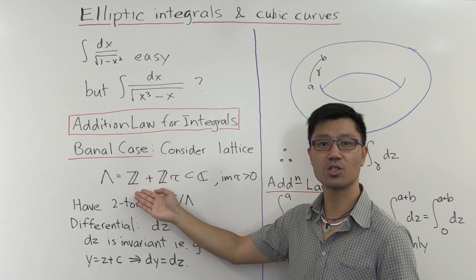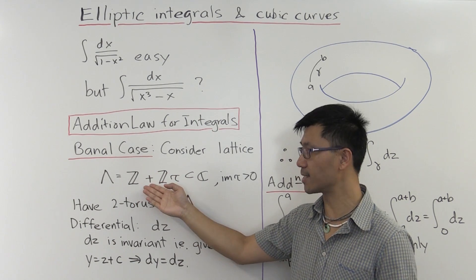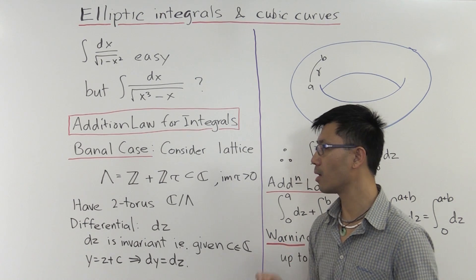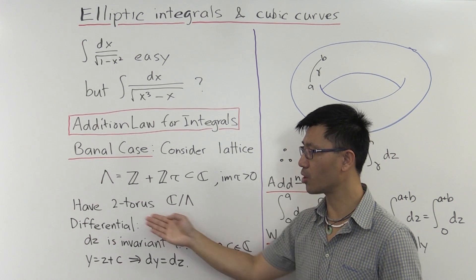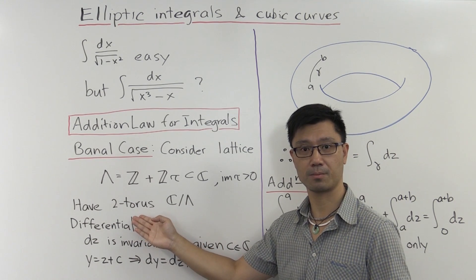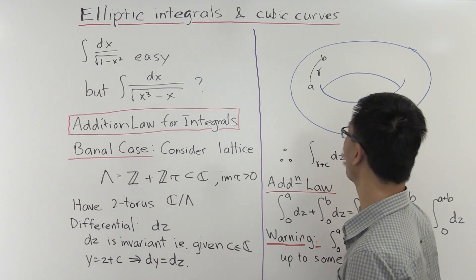So as a group, this is just ℤ². It's the direct sum of two copies of ℤ. And when we take the quotient of C by Λ, what we get is topologically a two-torus. So that's what I've drawn over here, a two-torus. And cubic curves topologically look like this two-torus here.